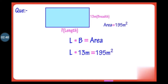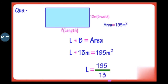This is the rule of mathematics — we have to perform the opposite operation to find the unknown. Since 13 is multiplied with length, and the opposite of multiplication is division, we find the length by dividing 195 by 13. When we divide 195 by 13, we get 15 meters as the length.